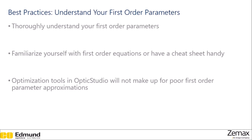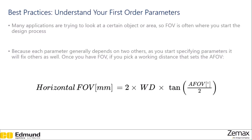No amount of optimizing will get you better than what your first order parameters say you should be getting. Many applications are also trying to look at certain object areas or fields of view, so this is often where a design process is started. Once you have this parameter, many other parameters are going to fall in place. So if you know your horizontal field of view and you have a working distance you want to work with, then there is a specific angular field of view that will be used. This can often then lead to a set focal length if you know your sensor size. So make sure you know what your set parameters are and then figure out what other parameters you need to fulfill these.